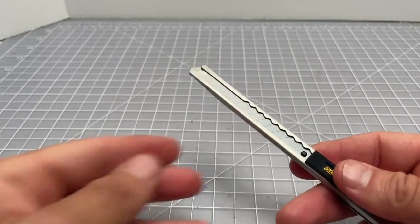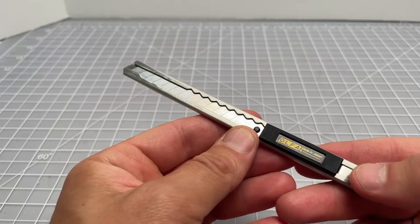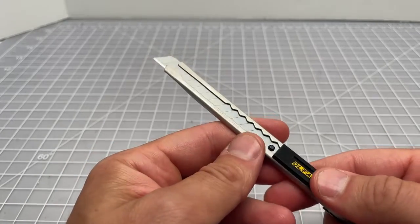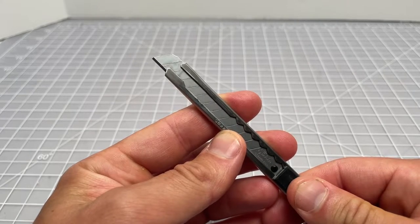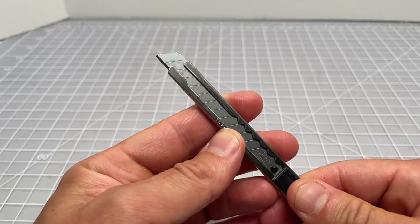The next step is how do you snap off the blade? When the end is no longer sharp, you'll want to snap it off. Extend it to a single piece like this. You'd see the marking there.